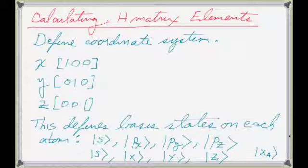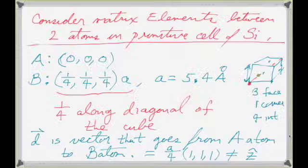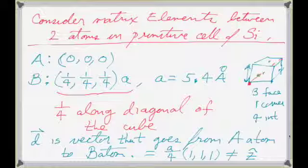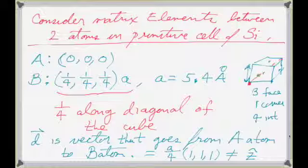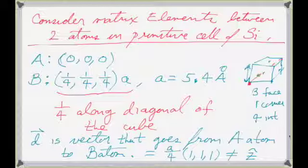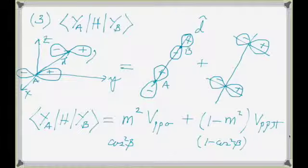We started setting up the problem to finally calculate the Hamiltonian matrix elements. The first thing was to define our coordinate system, which is easy for a cubic semiconductor — knowing where the two atoms are in your primitive unit cell that are going to repeat to make the entire crystal. These are the A and B atoms.